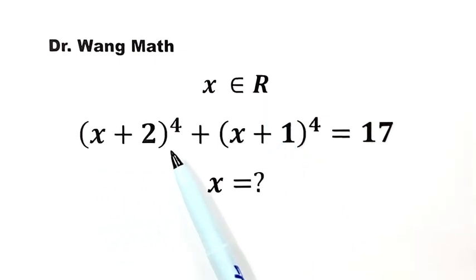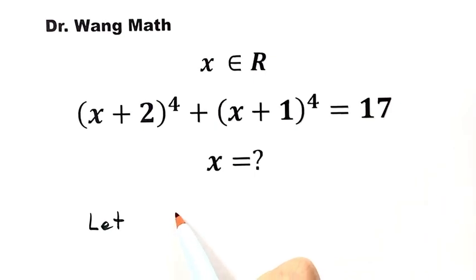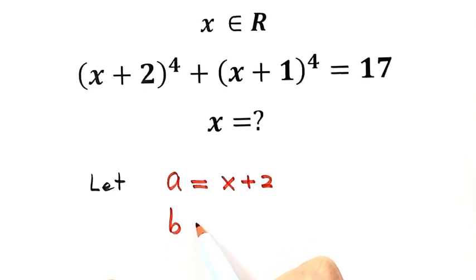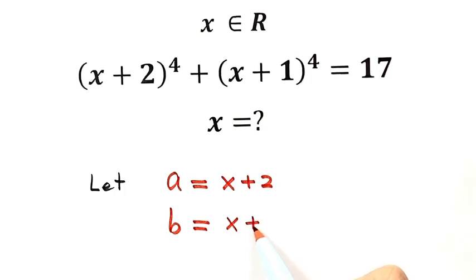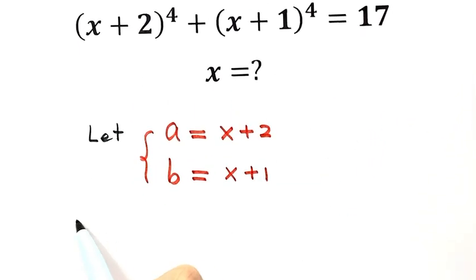Because the coefficients between the two terms are the same, we're going to use a special method to solve this equation. We'll define two variables: let a = x + 2, and let b = x + 1. So the equation becomes a⁴ + b⁴ = 17.